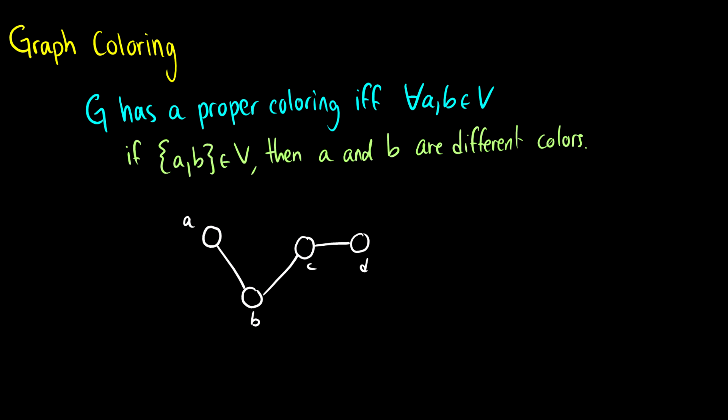Graph coloring is essentially the number of ways we can color graphs. We introduce the term proper coloring when we can color a graph so that two vertices connected by an edge don't have the same color. So if A is connected to B, and A is pink, then B cannot be pink.